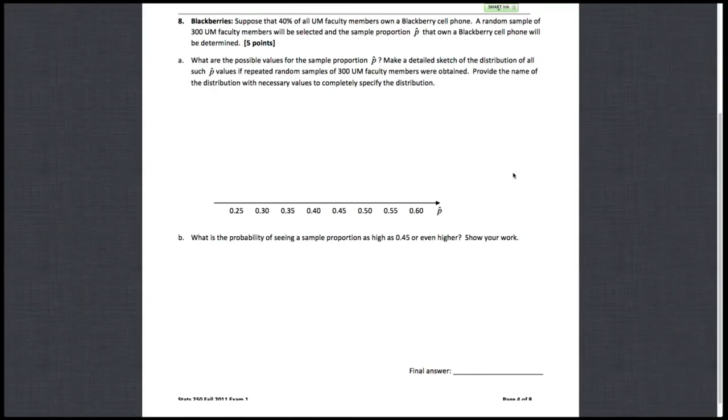So let's go back here. So, we know it's going to be a normal p square root of p times 1 minus p over n distribution. So now we need to get our p and our n. So it says here, suppose that 40% of all UM faculty members own a BlackBerry cell phone. That's a parameter. That's our p because we know for all UM faculty members it's 40%. And the sample that we're going to take is 300 to determine some p-hat.